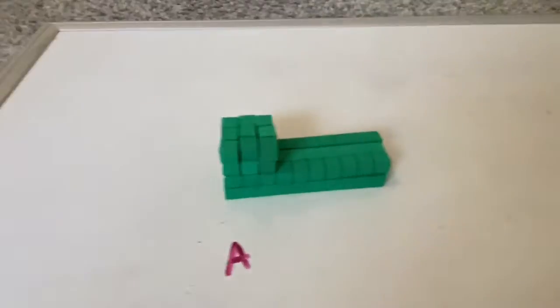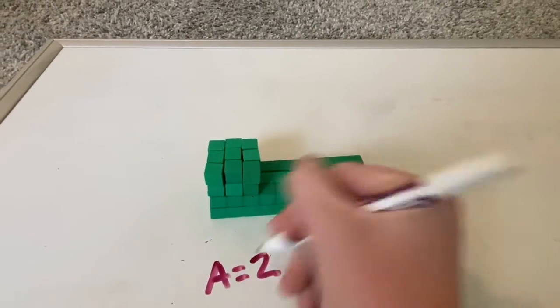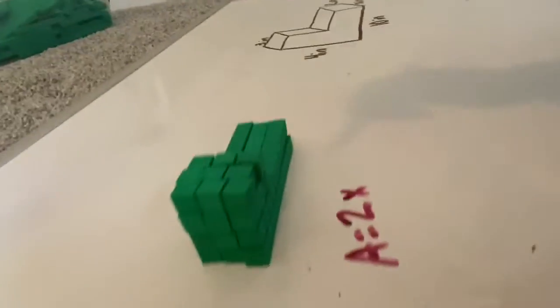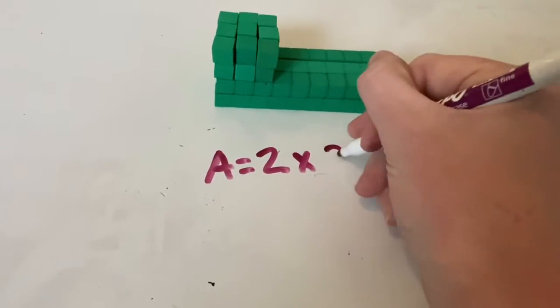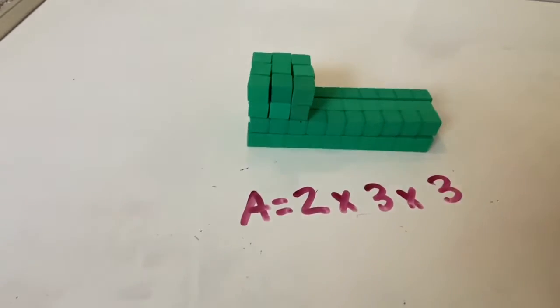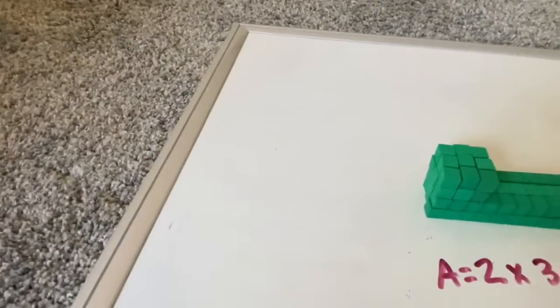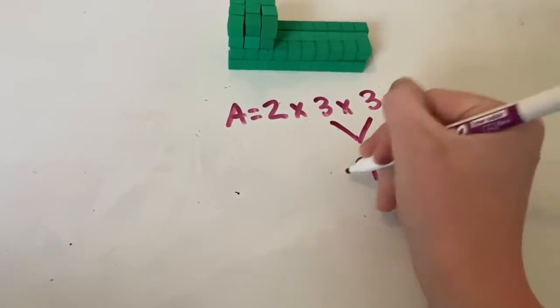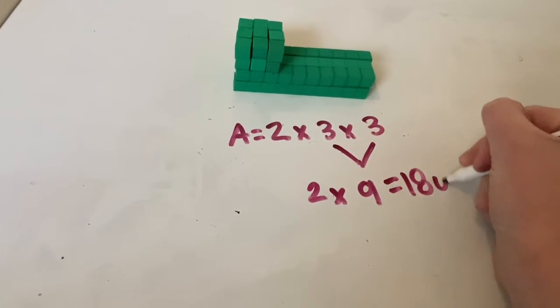So I'm going to go ahead and write my equations for figure A, which I'm going to say is the top. I can see that it's two unit cubes in height. It is three unit cubes in length, and then it's also three unit cubes in width. So if I'm looking at the base of this top figure using unit cubes, it's three times three will give me the base, which is nine, and then times the height, two, will give me 18 unit cubes.